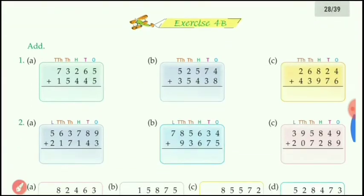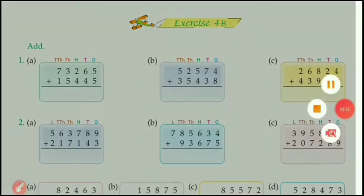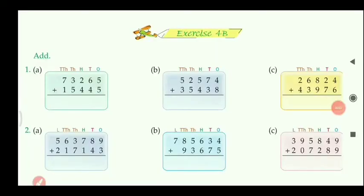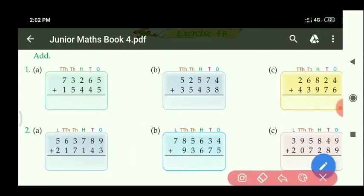Now let us start Exercise 4B. Look at the screen for Exercise 4B — the question says 'add only,' and digits are given up to 5 digits. For the first question, at 1's place: 5 plus 5 equals 10.